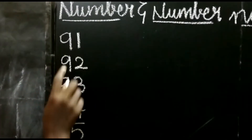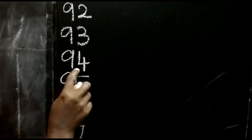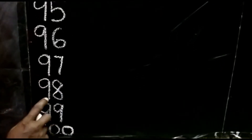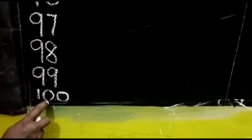Once again listen: 9, 1 — 91. 9, 2 — 92. 9, 3 — 93. 9, 4 — 94. 9, 5 — 95. 9, 6 — 96. 9, 7 — 97. 9, 8 — 98. 9, 9 — 99. 1, 0, 0 — 100.